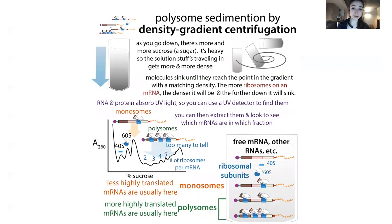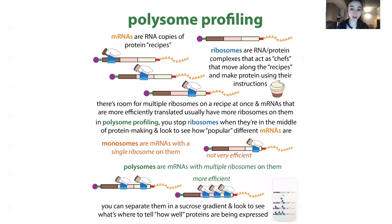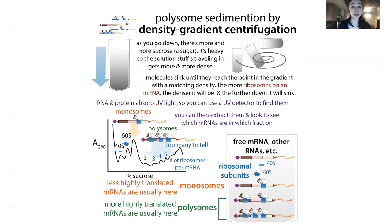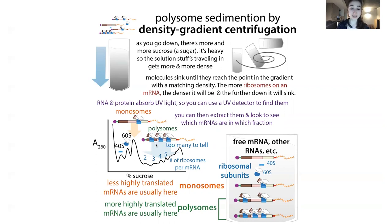I've talked about density gradient centrifugation before in the context of ribosomes, but there I was talking about polysome profiling — where you try to figure out how many ribosomes are on a messenger RNA. If messenger RNAs are being translated a lot, you're going to have a lot of ribosomes on them, and we call this a polysome. If they only have a single ribosome, they're likely less highly translated, and we call this a monosome. When doing ribosome purification, we don't want the ribosomes attached to all that giant mRNA, so we use harsher conditions — much higher salt concentrations than in polysome profiling, where you use gentler conditions to keep everything together and isolate the mRNAs containing the ribosomes.